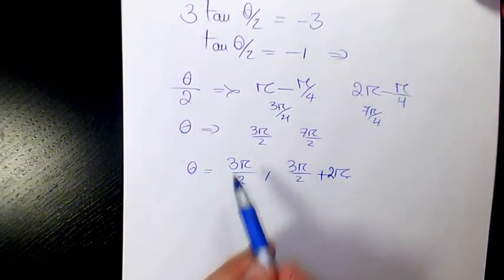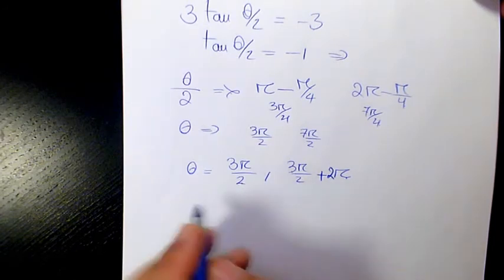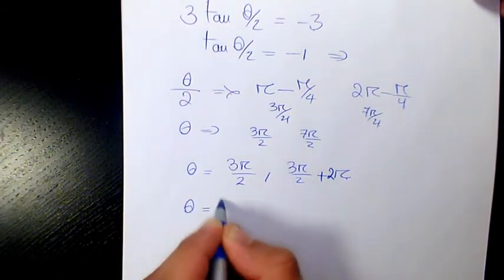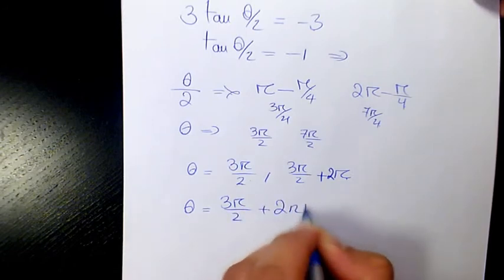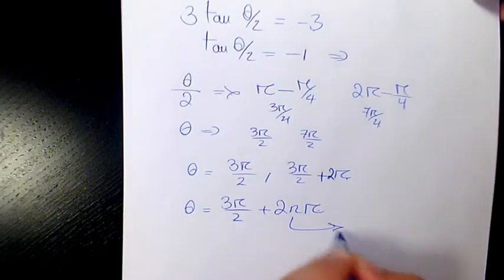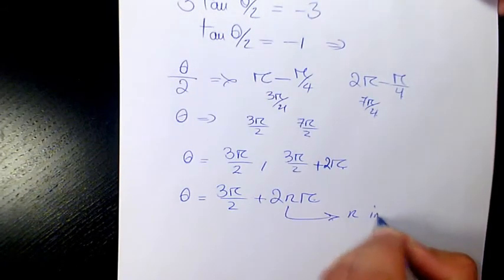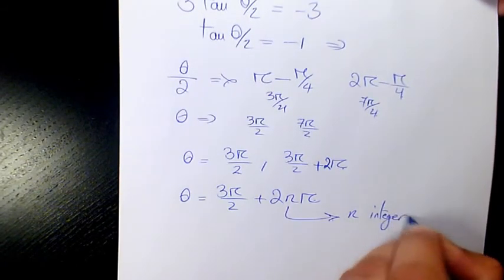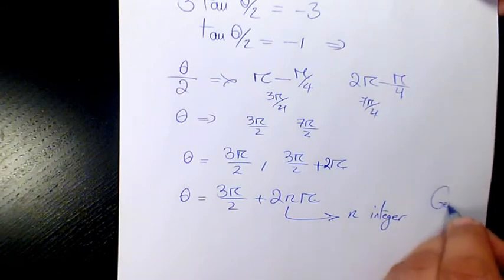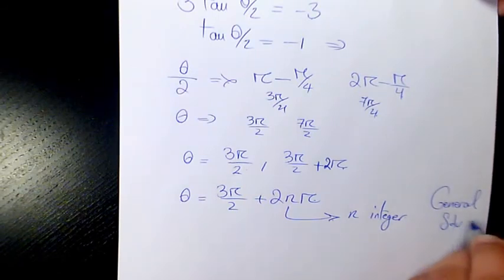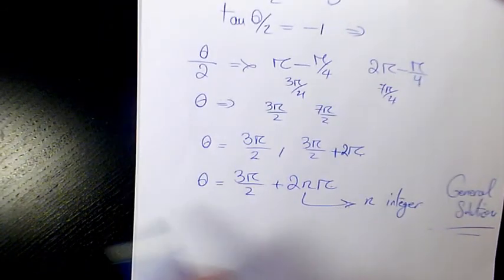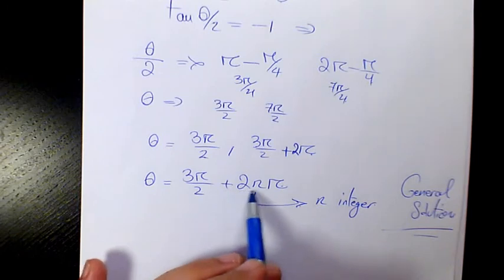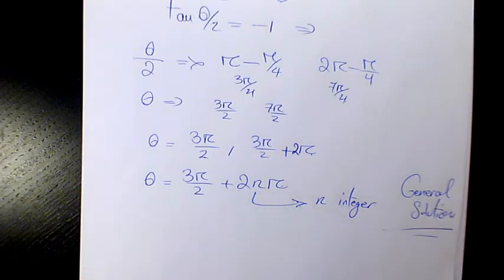However, if you want to write down the general solution, we're going to have 3π/2 plus 2nπ, so n is going to be the integer. That's the general solution: 3π/2 plus 2nπ. So this is the final answer.